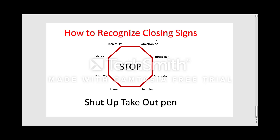So those are the eight closing signs: hater, switcher, direct yes, nodding, silence, future talk, questioning, and hospitality. I've used and recognized all of these closing signs and gotten better and faster at recognizing them. I know how to pull people out and what pitches to give depending on who they are.